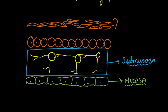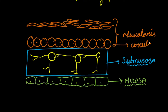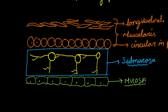Then comes the third innermost layer, that is the muscularis layer. In this muscularis layer we have two different folds of muscle: one is the circular muscle fold, which is very thick, and the second one is the longitudinal muscle fold.